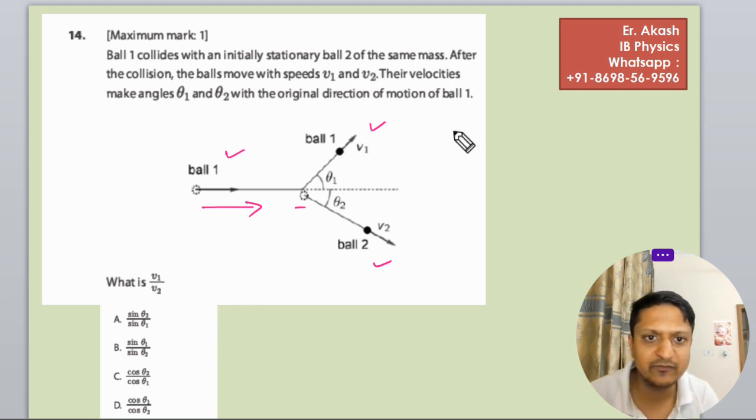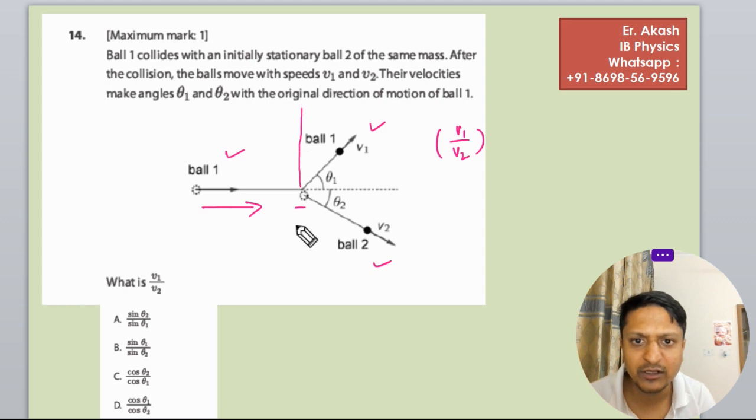So v1 upon v2 we have to find, so what is v1 by v2? In this question we will break the v1 component and v2 component into the horizontal and vertical component and we will equalize the vertical component.